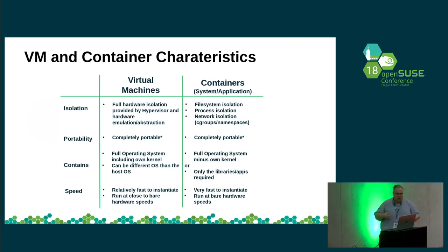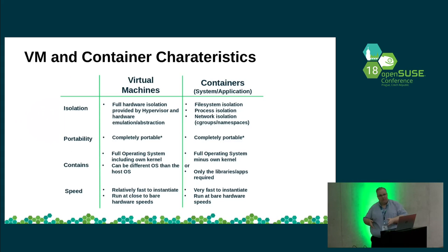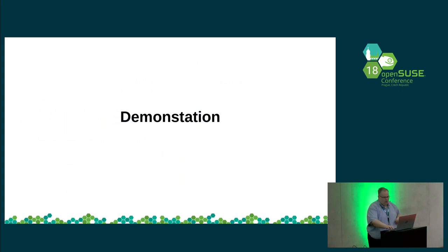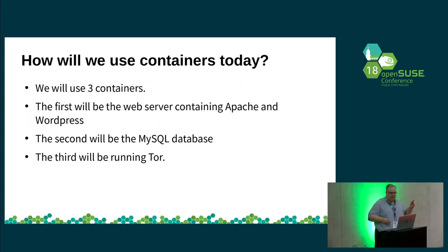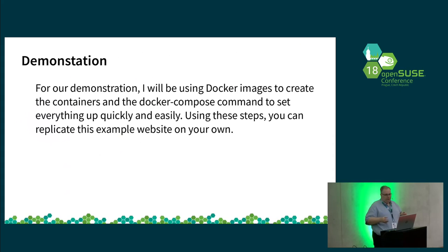Some comparisons between virtual machines and containers: isolation, portability, what they contain, and speed. The big thing to point out is that containers run a little faster. They have some limitations. VMs require more overhead, run a little slower, but also contain a full operating system and not just the piece needed to run an application. So, our demonstration: today we're going to use three containers. The first will be a web server running Apache and WordPress, the second will be a MySQL database, and the third will be running Tor. I'll be using Docker images and the docker-compose command to set up everything quickly and easily.